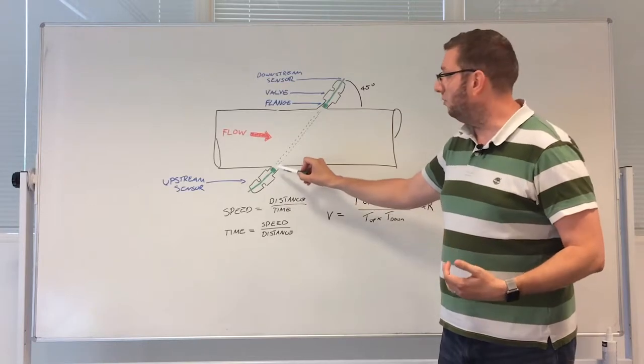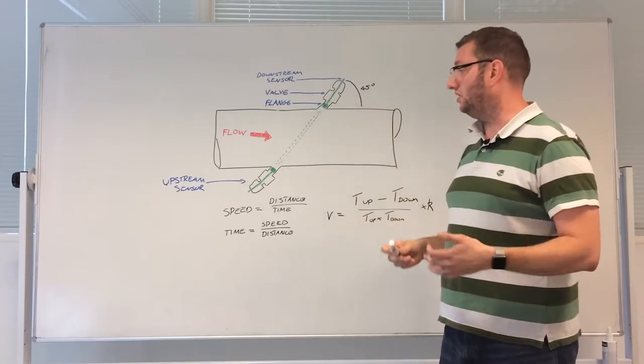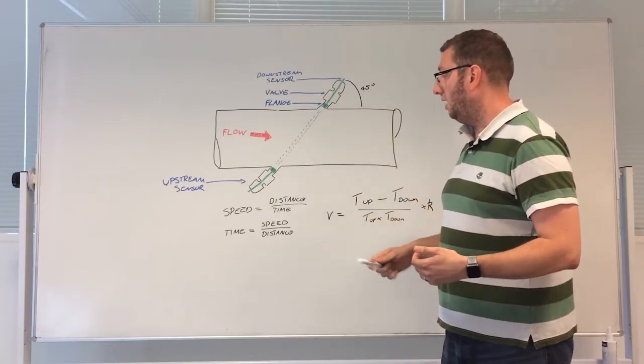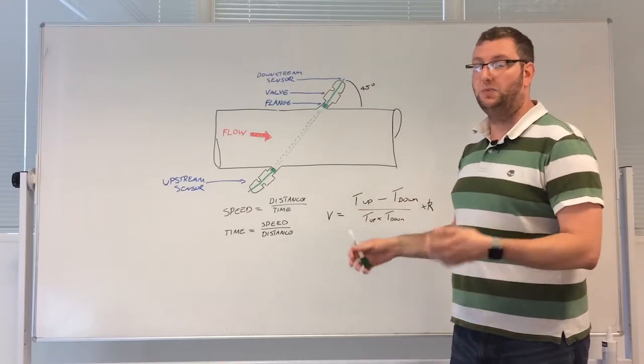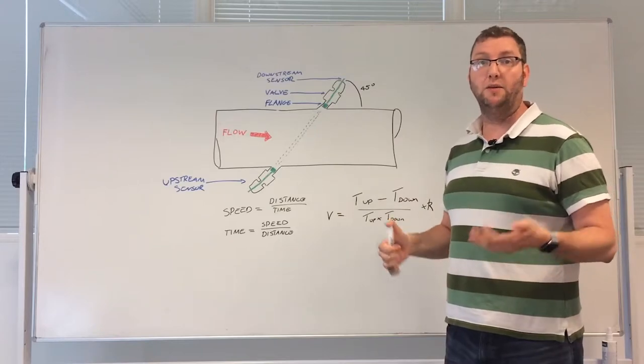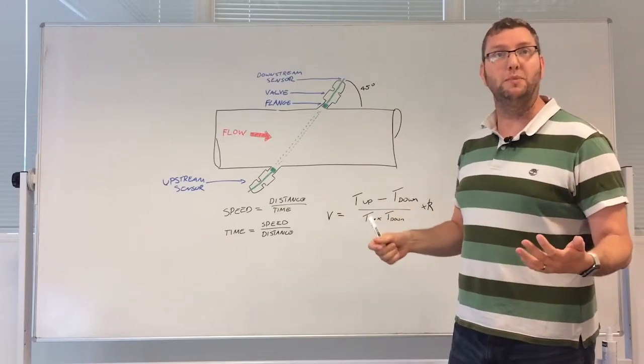Now when we set these systems up we can measure the distance between these transducers really accurately, and when we talk about speed in this we're talking about speed of sound. So the speed of sound in dry air under atmospheric conditions is about 330 meters a second.